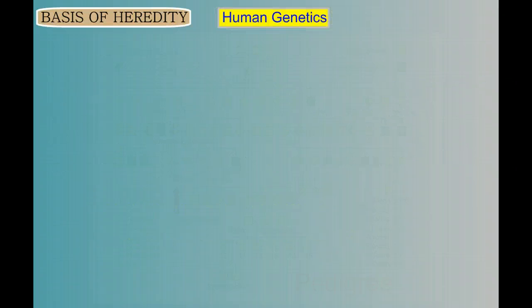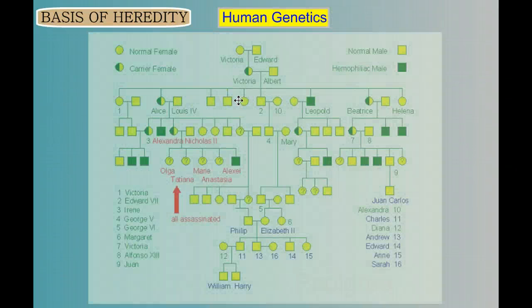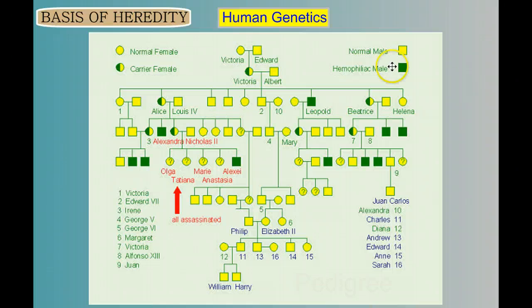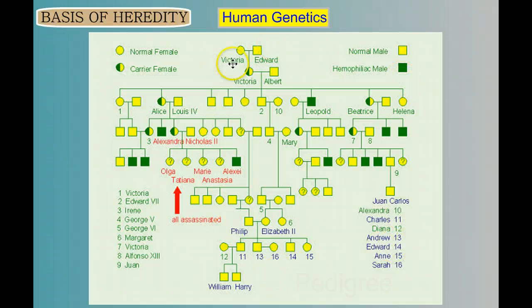When we study human genetics and disorders in humans, one of the things we like to do is use pedigrees — in other words, look at a family tree or a family history. The reason we need to do this is because studying human genetics takes a long time. The generation time is long. When we study fruit flies, we can get many generations in a short period of time, but humans take longer to reproduce and they reproduce in much smaller numbers. So often we'll study family histories and look at these pedigrees.